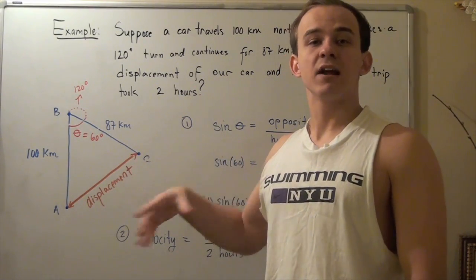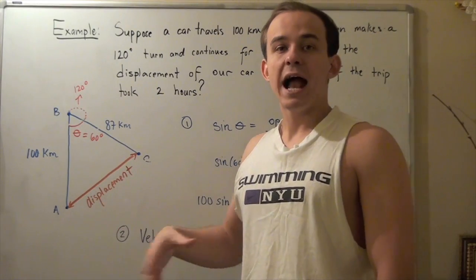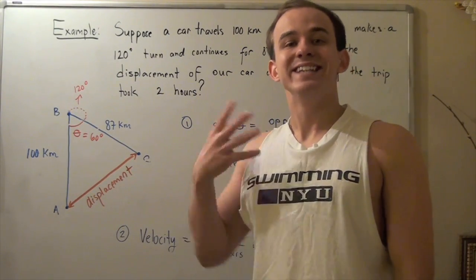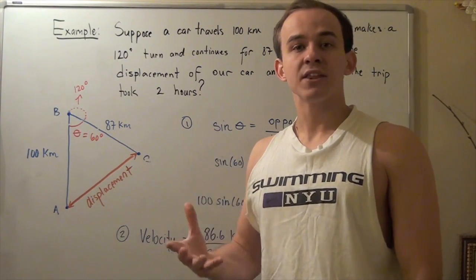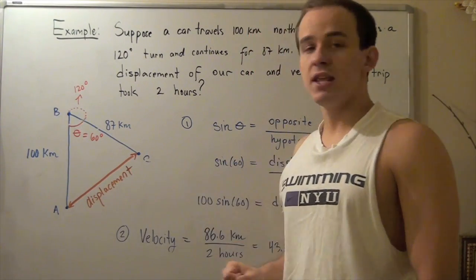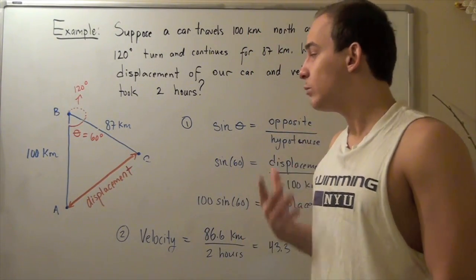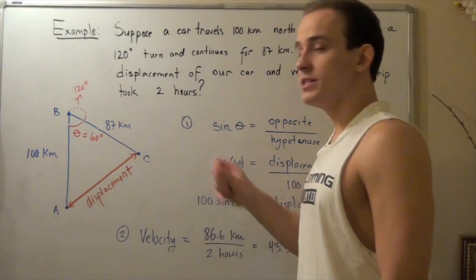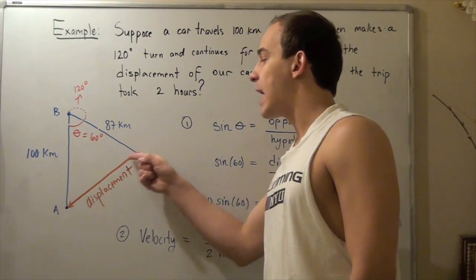This is not the same thing as our displacement. Our displacement is the net distance or the shortest path that our car could have taken to go from point A to point C. We simply draw a line connecting point A and point C and this represents our displacement.